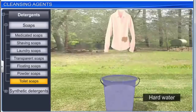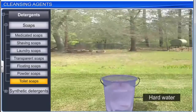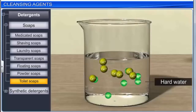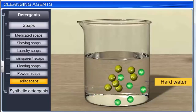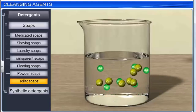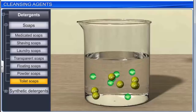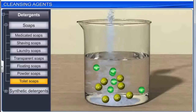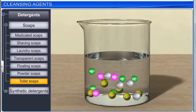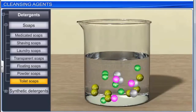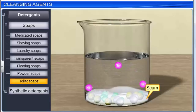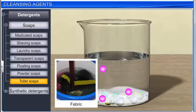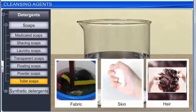Soaps are good cleansing agents, but they do not work with hard water. Hard water has high mineral content that primarily consists of calcium and magnesium ions, which make the water resistant to soaps. When these ions come into contact with sodium or potassium soaps, they form insoluble calcium and magnesium soaps, rendering them useless as cleansing agents. Calcium and magnesium soaps form a white precipitate called scum in water, which hinders cleaning by sticking to cloth fiber, skin, or hair, thus preventing the formation of lather.